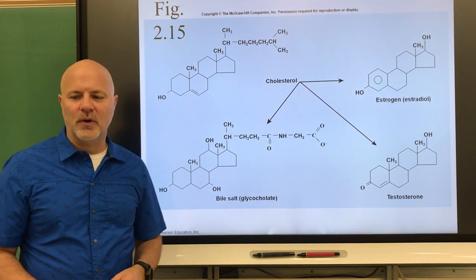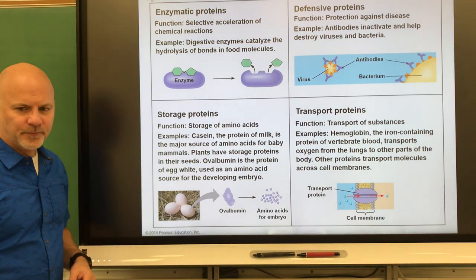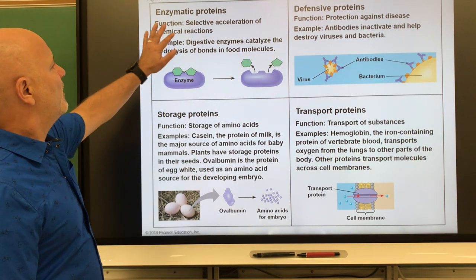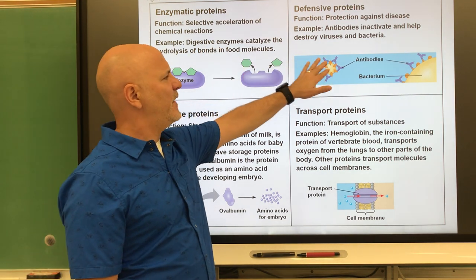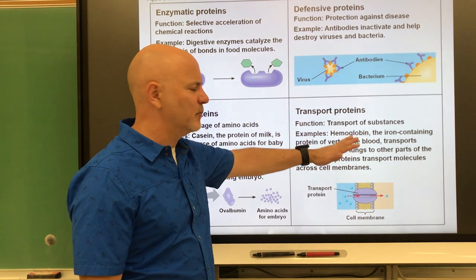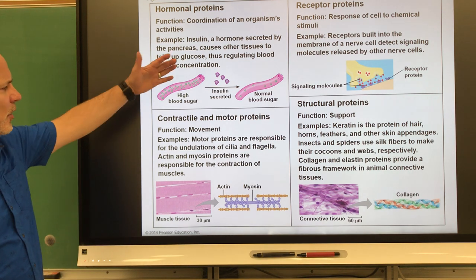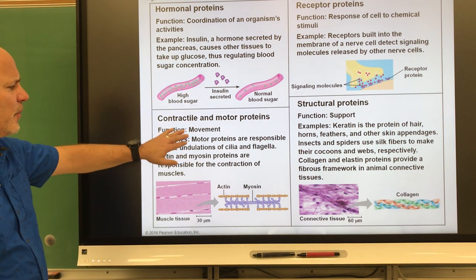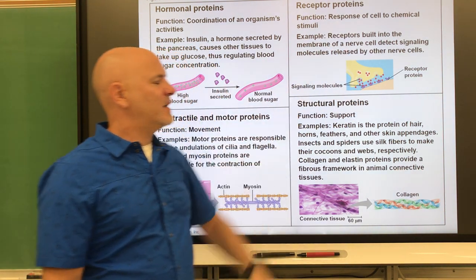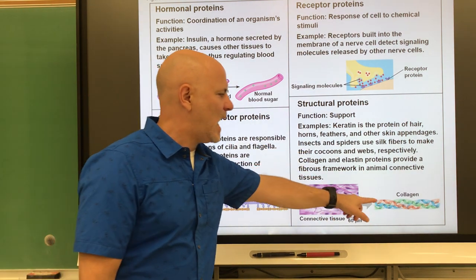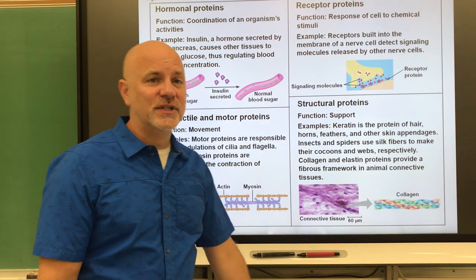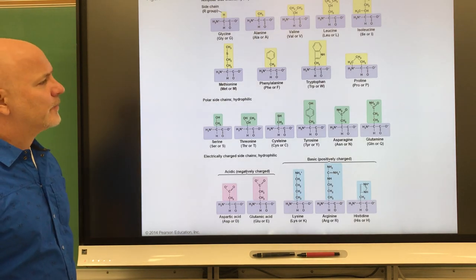Waxes are another group of lipids, used by organisms for waterproofing. Moving on to proteins — proteins are large molecules composed of amino acids and they have many functions in the body: enzymatic proteins, defensive proteins like antibodies, storage proteins like ovalbumin, transport proteins, hormonal proteins, contractile proteins like actin and myosin found in muscle, receptor proteins, and structural proteins like collagen found in tendons, ligaments, eyes, skin, and muscles.